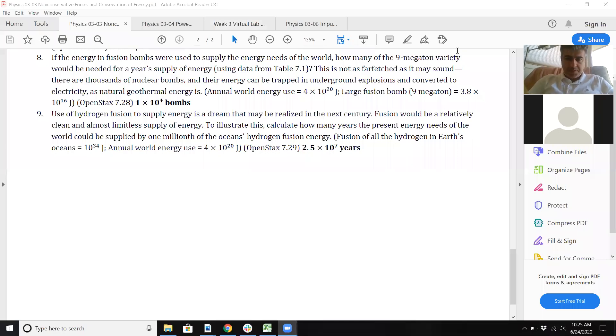Here we go. If energy from fusion bombs were used to supply the energy needs of the world, how many of the nine megaton variety would we need for a year's supply of energy using data from Table 7.1? Okay, I gotta look up that table. I'm not sure where that is—actually, I know where it is.